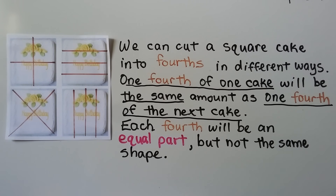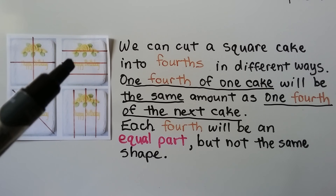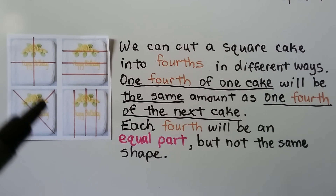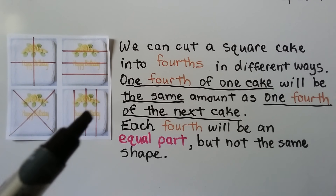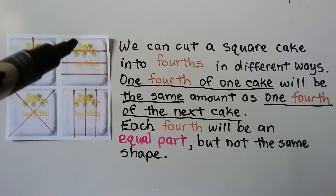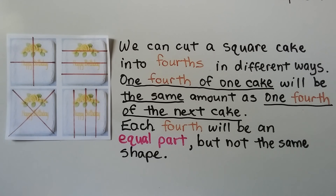So look at it this way. If you bought four identical birthday cakes from the bakery and you cut them into fourths in different ways, we can cut a square cake into fourths in different ways. We can cut it to make four equal parts, cut it horizontally for four equal parts, cut it on a diagonal and then a diagonal again for four equal parts, or make vertical cuts for four equal parts. One fourth of one cake will be the same amount of cake as one fourth of another cake. Each fourth will be an equal part, just not the same shape. We just cut it differently into four equal parts.